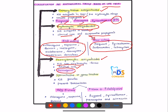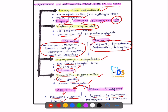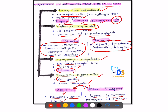Sporonticides or gametocytocidal drugs kill the gametes and prevent transmission. For Plasmodium vivax, these are chloroquine, mepacrine, and quinine. For both Plasmodium vivax and Plasmodium falciparum combined, the drugs are proguanil, pyrimethamine, primaquine, and artemisinin.